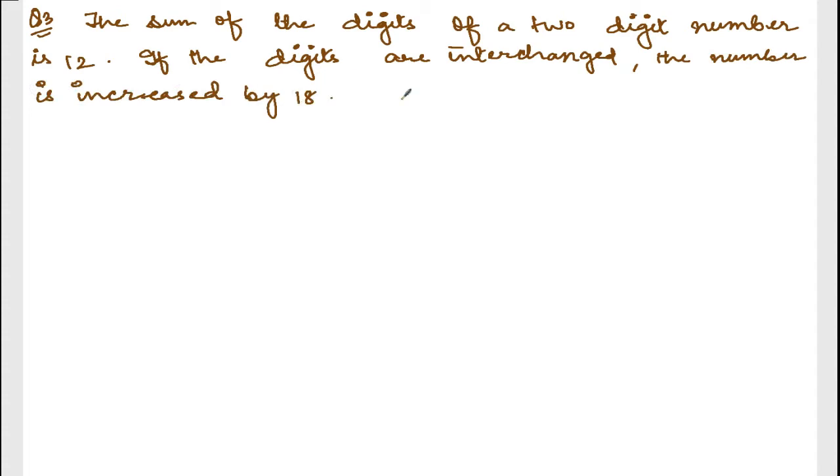Now, we are doing exercise 4.3, question number 3. Let me write down the question. Here is our question. The sum of digits of a two-digit number is 12. If the digits are interchanged, the number is increased by 18. So, let x and y be the number in 10th and unit place respectively.